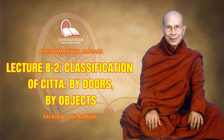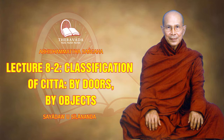Dharma objects are of six kinds. Going back to the handout: the five sensitivities, subtle matter, chetas, chetasikas, nibbana, and panyati are called dharma objects. The object of the 67 types of consciousness arising through mind-dwar are all six kinds of objects. And they are sometimes present, sometimes past, sometimes future, and also sometimes independent of time.